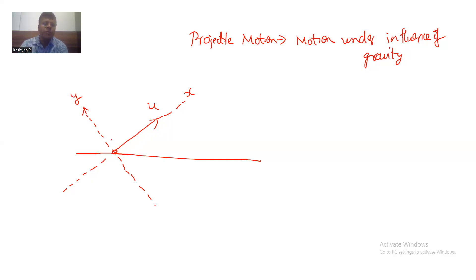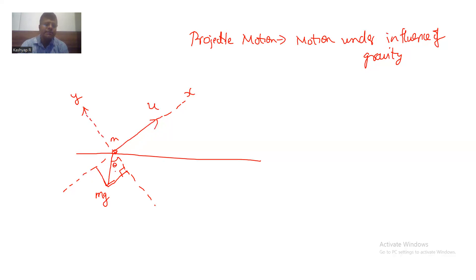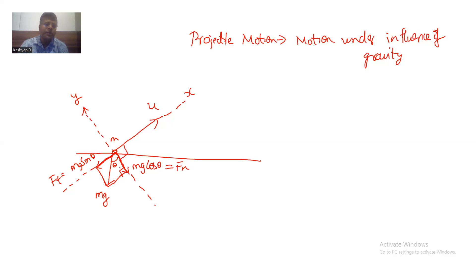The force acting on this object of mass m will be the gravitational force mg acting in the vertically downward direction. I can find the components of this force along the x and y directions to determine whether there is a normal force or a tangential force. If this angle is theta, then the component of weight along the direction of velocity is mg cos theta, and the component anti-parallel to the velocity is mg sin theta. So yes, there is a tangential force mg sin theta, and there is also a normal force because that component is perpendicular to the velocity.